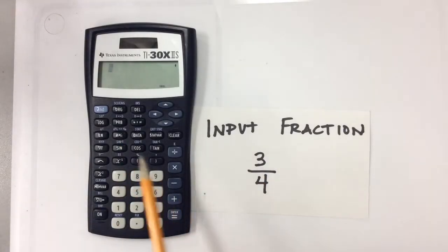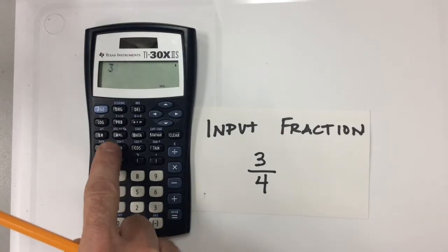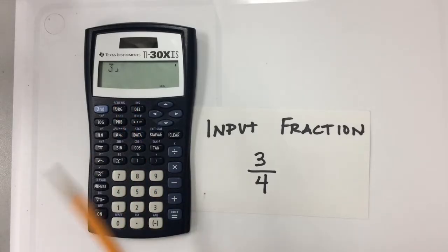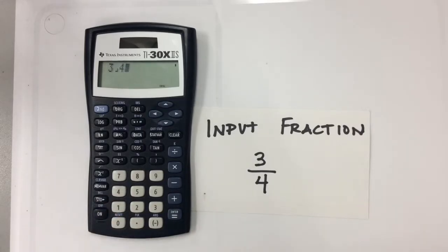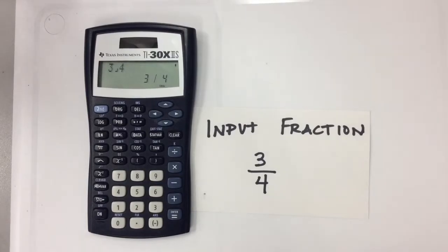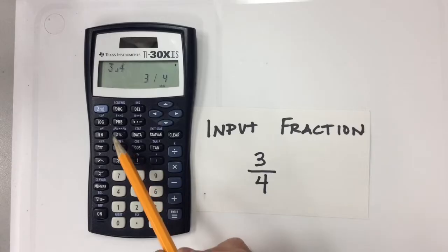If I want to input three-fourths as a fraction, I'm going to push three, then hit that A, B over C button, and you see this little thing that looks kind of like a comma. That is basically the calculator's way of telling you that that's a fraction bar. Three-fourths, right there — that calculator is reading this as three-fourths. If I just hit enter, it shows it like a fraction. That's what it's receiving from you when you input it that way. So that's the first piece of information you need to know — how to input the fraction using A, B over C.